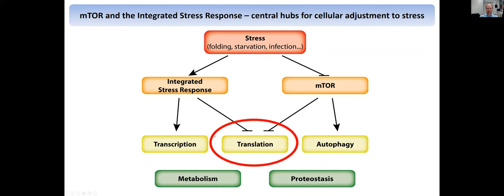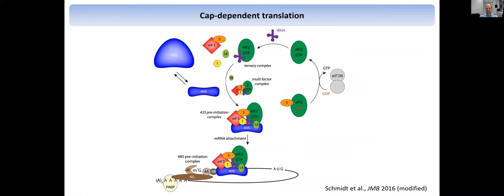I really wanted to understand better what are the roles of the integrated stress response and mTOR in attenuation of translation, and what are the targets of this regulation. This is really the situation where we were at. This is a textbook introduction of translation and how this is initiated, with different aspects including the pre-initiation complex formation with the ternary complex where we need eIF2, and eIF2B as a guanine exchange factor, where you form this pre-initiation complex.